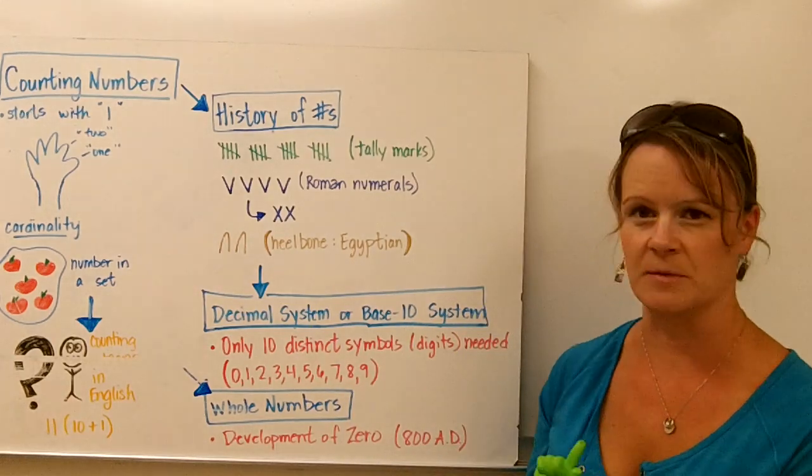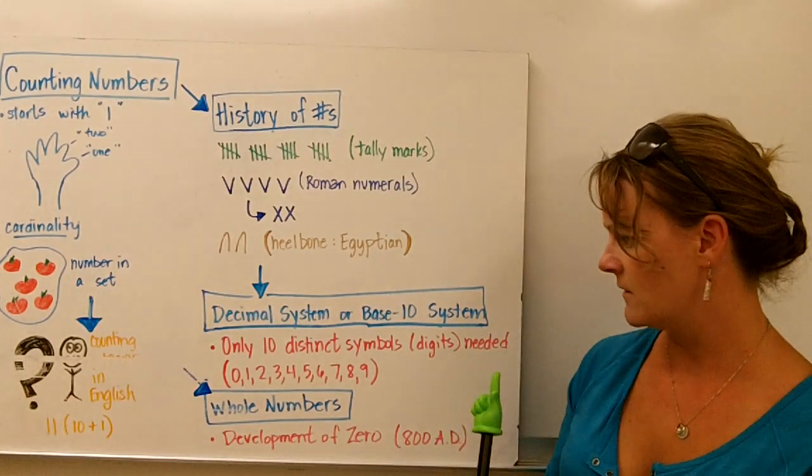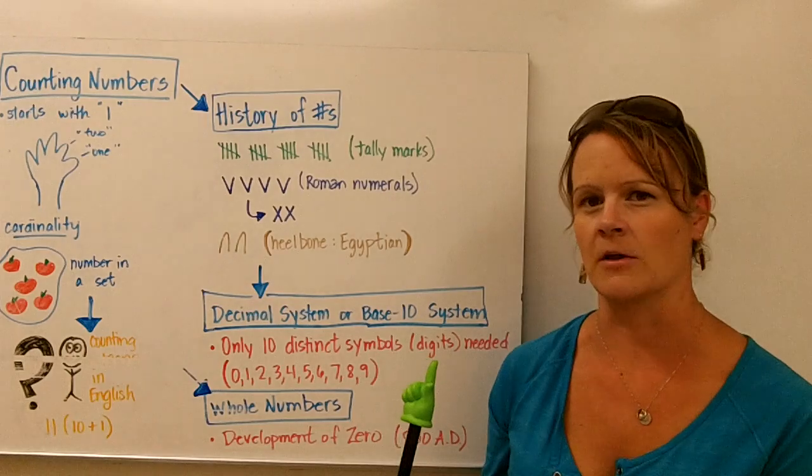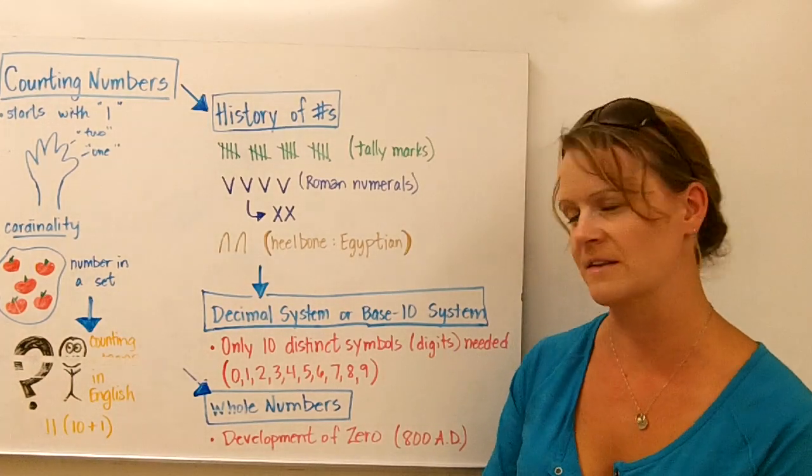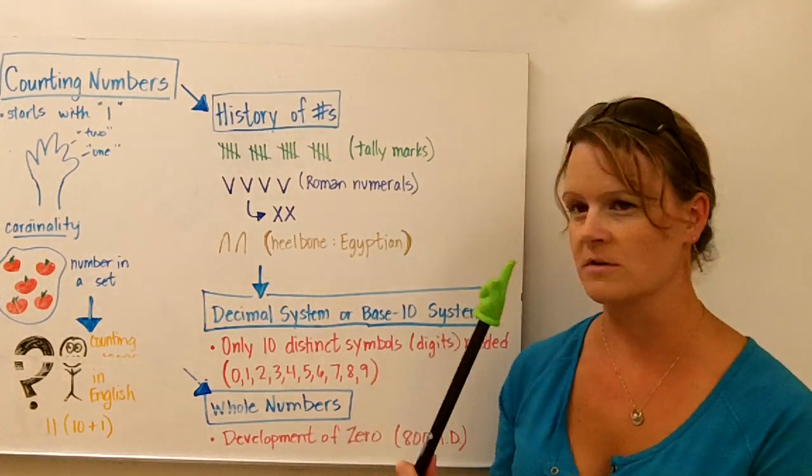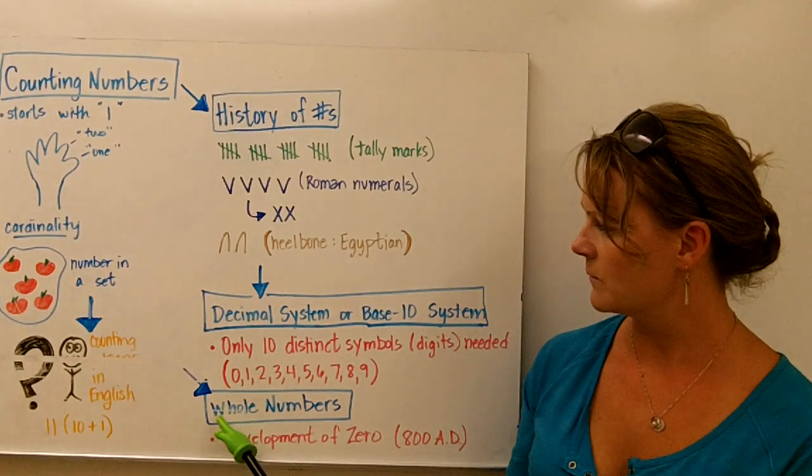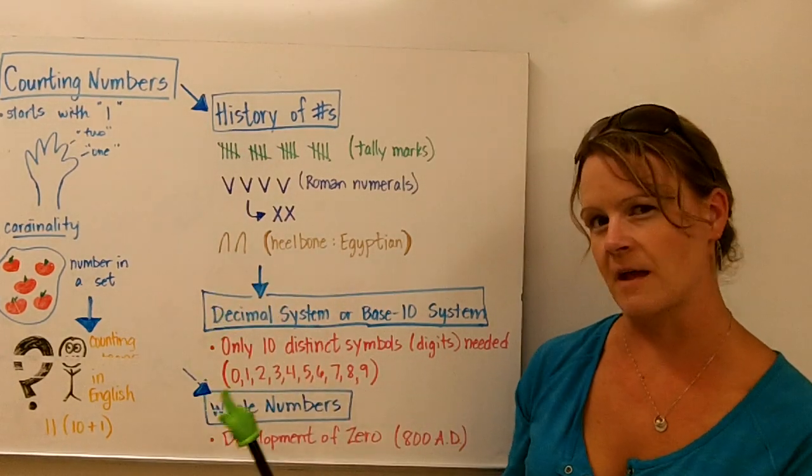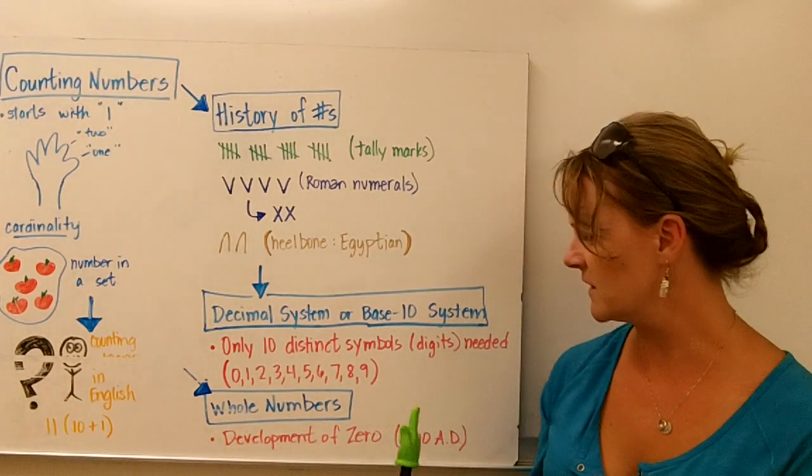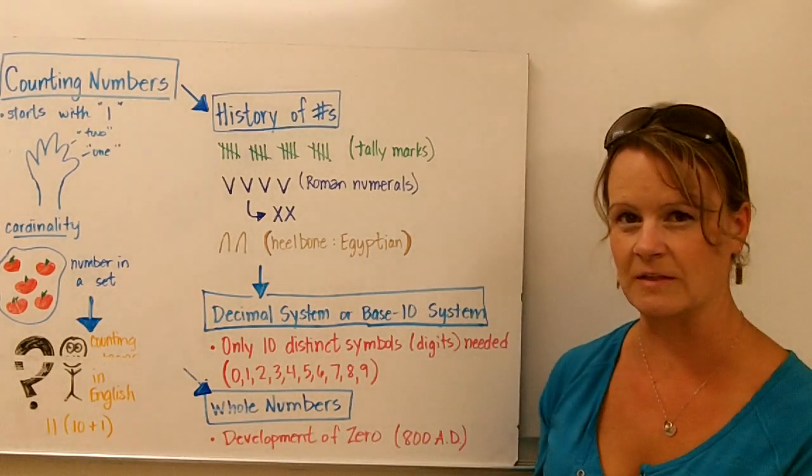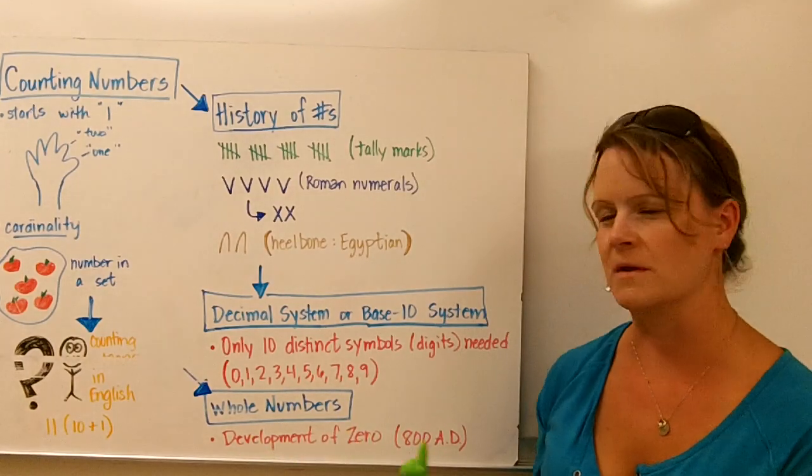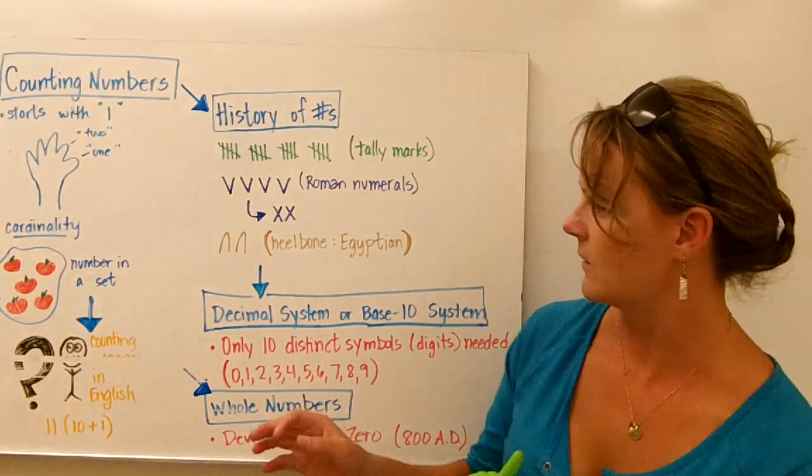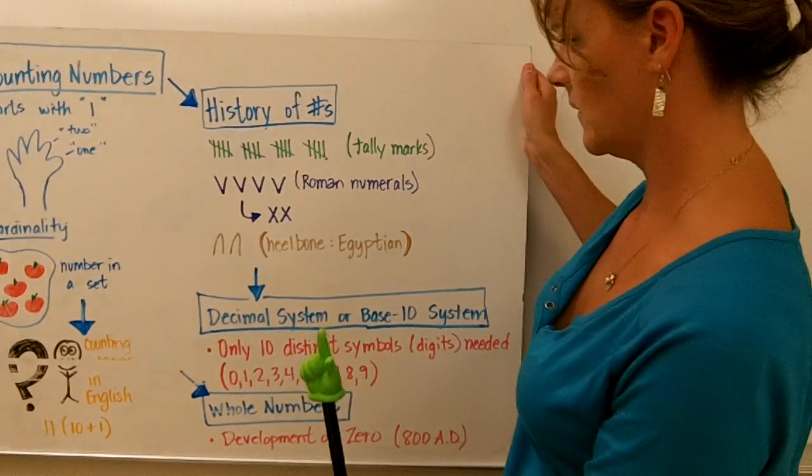Because the unique thing about the decimal system, or the base ten system, is that it's all based on a value of a place. We're going to talk about that in just a second. Before I go to the next board, I just want to point out whole numbers. As systems of numbers basically advanced with civilization, whole numbers developed. And it wasn't until 800 AD, which is fairly late in civilization, that the development of zero came about.